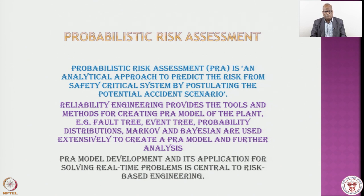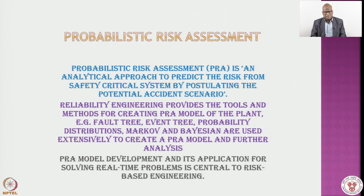What PRA says — and the same applies to deterministic analysis — is: considering the postulated initiating events (PIE), the set of initiating events which are possible, perform the analysis and prove that the system is safe. In probabilistic risk assessment, reliability engineering provides the tools and methods for creating the PRA model. Major tools include fault trees, event trees, probability distributions, Markov models, Bayesian modeling, and many more. Addressing real-time problems is not always straightforward — many assumptions are to be made and constraints exist — and that is where uncertainty and sensitivity analysis must be captured to make the results more credible.